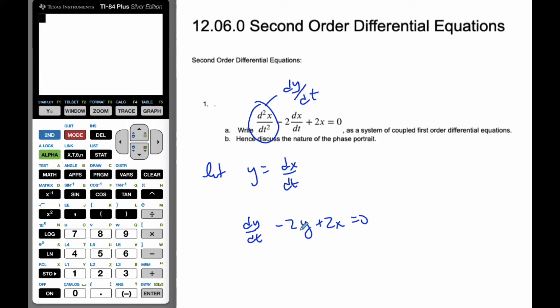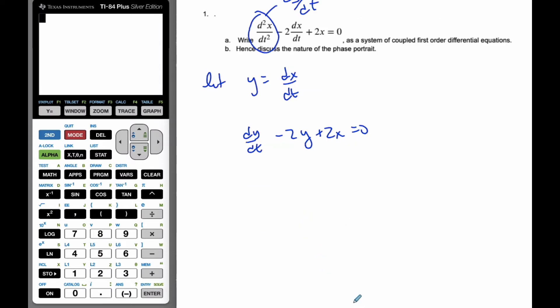And so now, if I rearrange this as I know, I typically have dx/dt is equal to y. Here's my one, and the other one is dy/dt is equal to, if I bring this over, is going to equal negative 2x plus 2y. And now I have our, this is our coupled first-order differential equations.